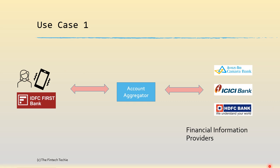In this whole cycle, you have the financial information providers — because they are the ones who provide information — and the financial information user, because they use the information given by the provider.